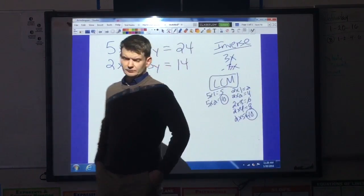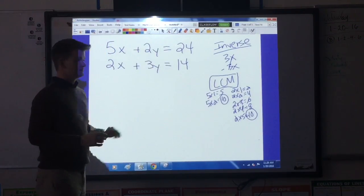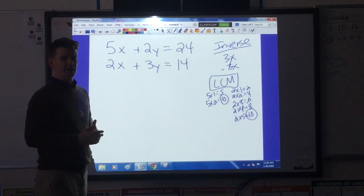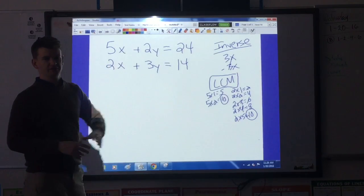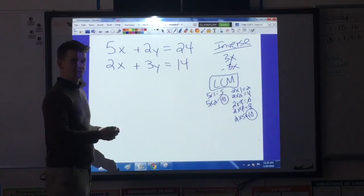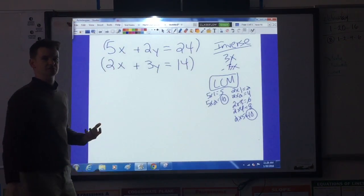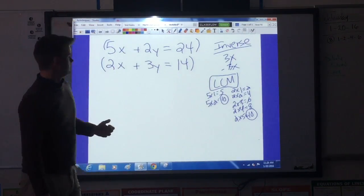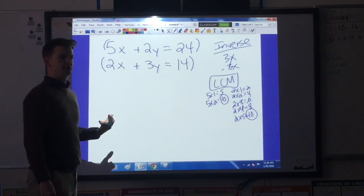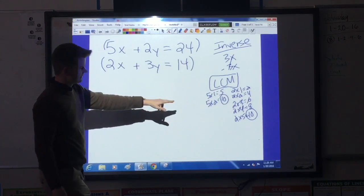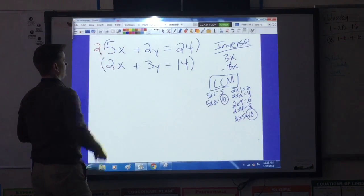What that means is, I'm going to want to turn this top equation, specifically this x term, into a positive 10x. And I want to turn this bottom equation, specifically the x term, into a negative 10x. Here's how we do that. Simple multiplication. Since I'm multiplying, I'll wrap both equations in parentheses. Then, because I want a positive 10x on the top, I have to ask myself, what can I multiply 5 by to get a positive 10? I go back to my multiples. Well, 5 times 2 gave me positive 10. So I'm going to multiply this equation by a positive 2.